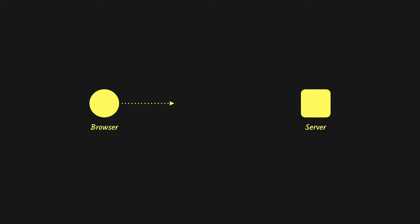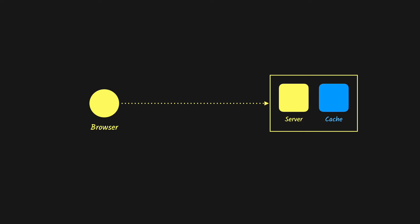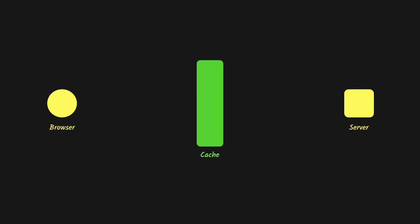Today's topic is web cache or the HTTP caching headers. As users we get frustrated when websites are slow, and to improve performance we normally use some kind of caching, which can either be on the server side in the form of application-level caching — for example using Redis or Memcached — or it can be on the client side.